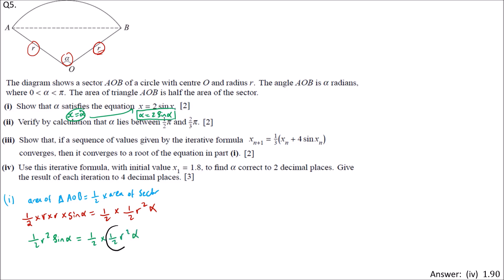On this side you find half R squared, we can eliminate it. Here also half R squared. So we have sin alpha equals half alpha. If we multiply by 2, we get 2 sin alpha equals alpha. So you find the equation is satisfied: alpha equals 2 sin alpha. That's the answer for the first part.